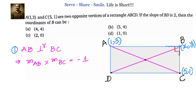The next condition is finding the equation of BD. We know the slope of BD is 2. To find the equation of BD, we leverage the property that midpoints of diagonals are equal. So we find the midpoint of AC, equate it to the midpoint of BD, then apply the point-slope form of a straight line to get the equation of BD.